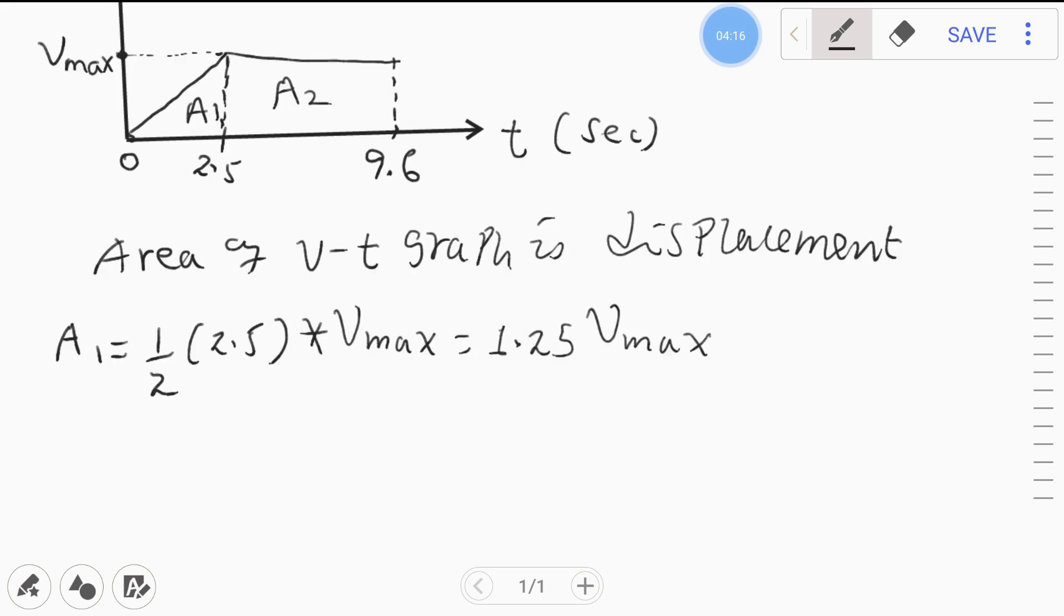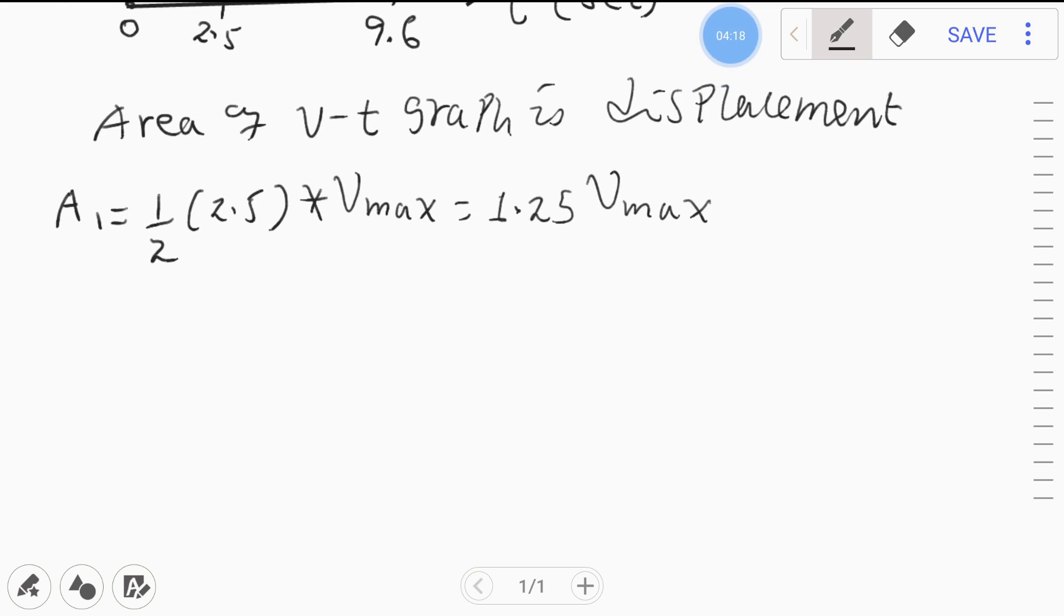Now what's the second area? Area 2 is a rectangle, so base times height. The base length is 9.6 minus 2.5 times the height v_max, so it will become 7.1 times v_max.